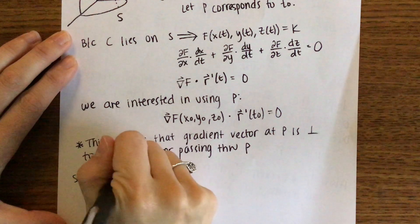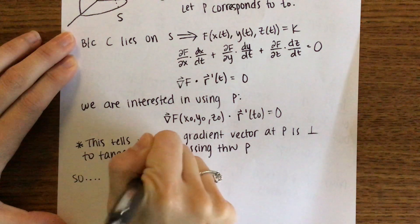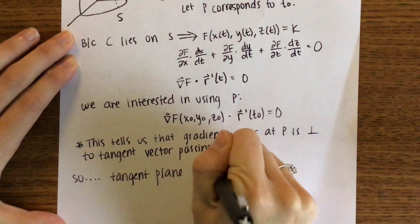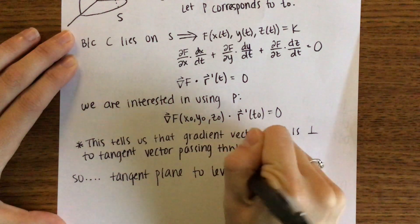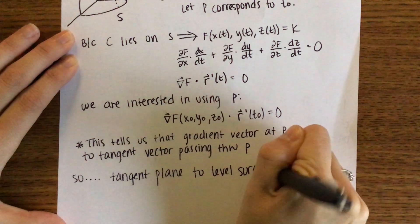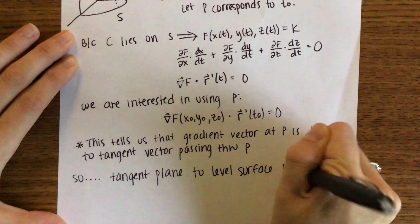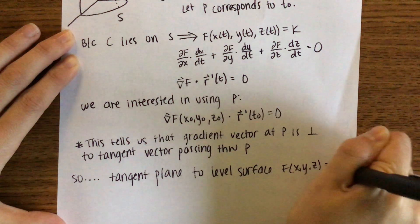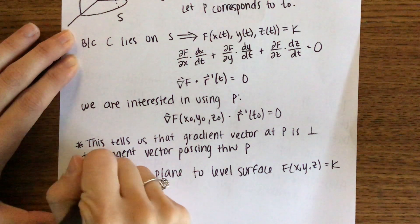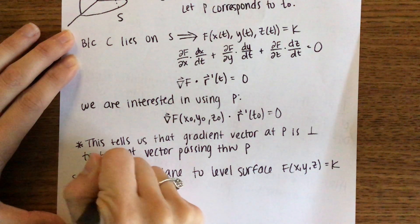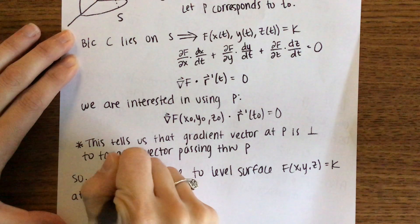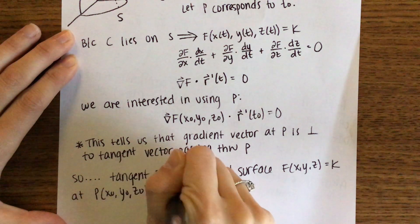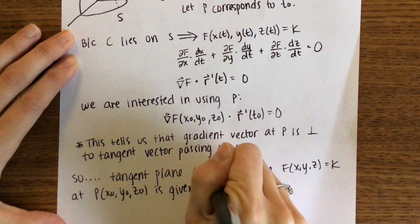This helps us because to write the equation of any plane we need a vector perpendicular to the plane. For the tangent plane, the gradient is exactly that perpendicular vector. So the tangent plane to the level surface f(x, y, z) = k at point P (x-naught, y-naught, z-naught) is given by the following equation.